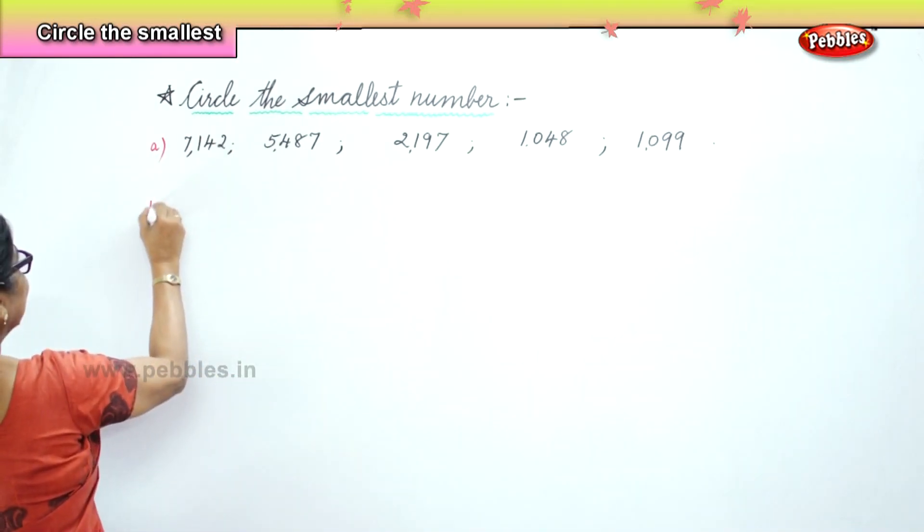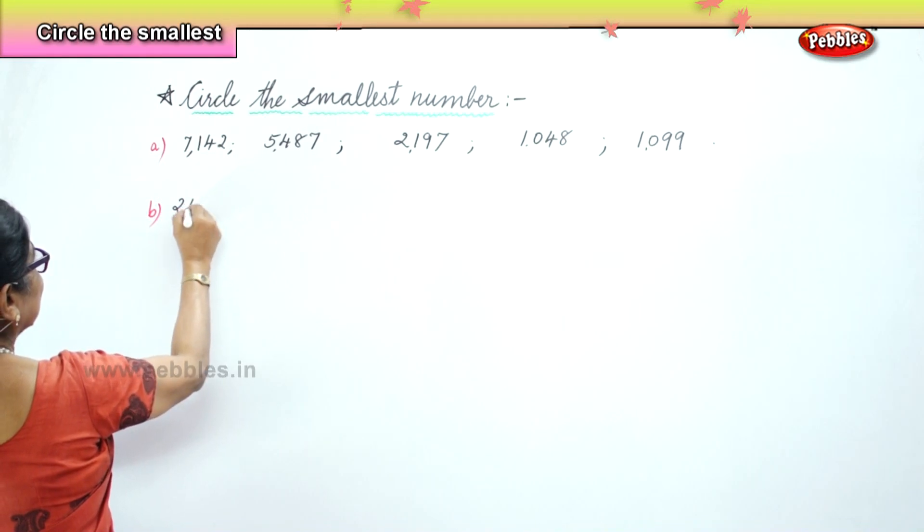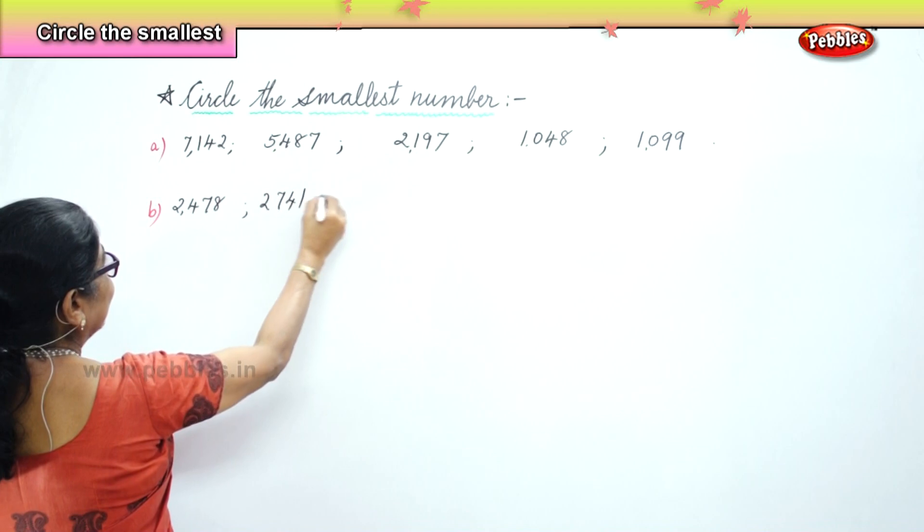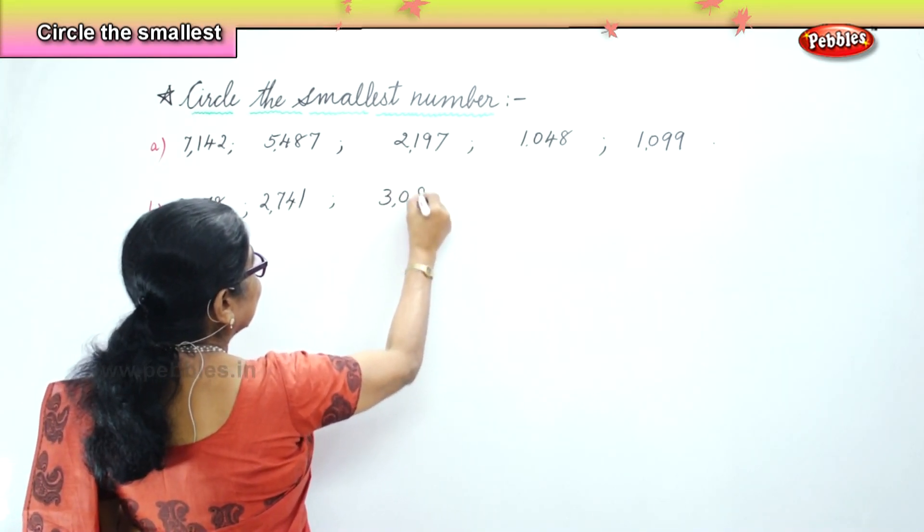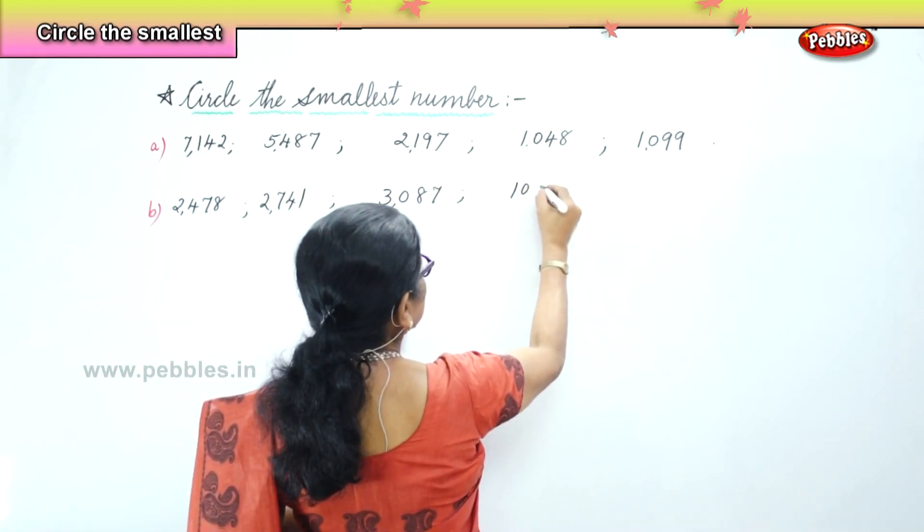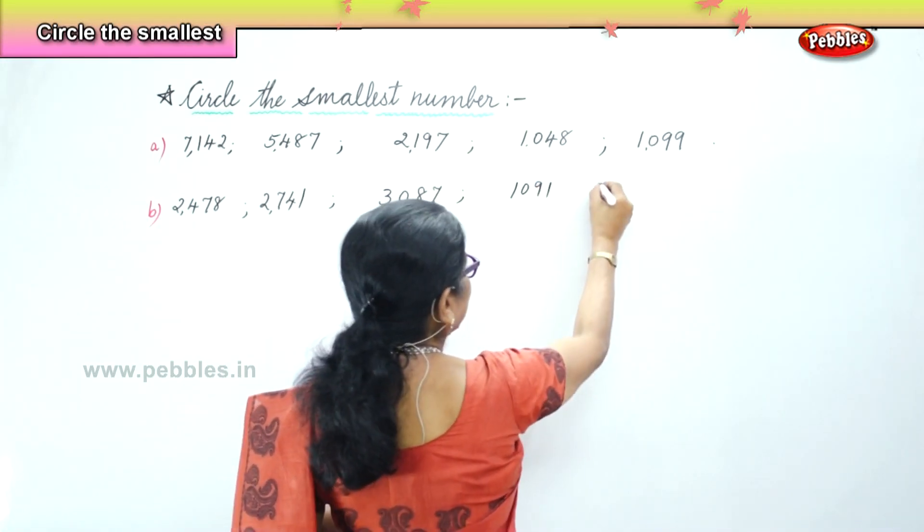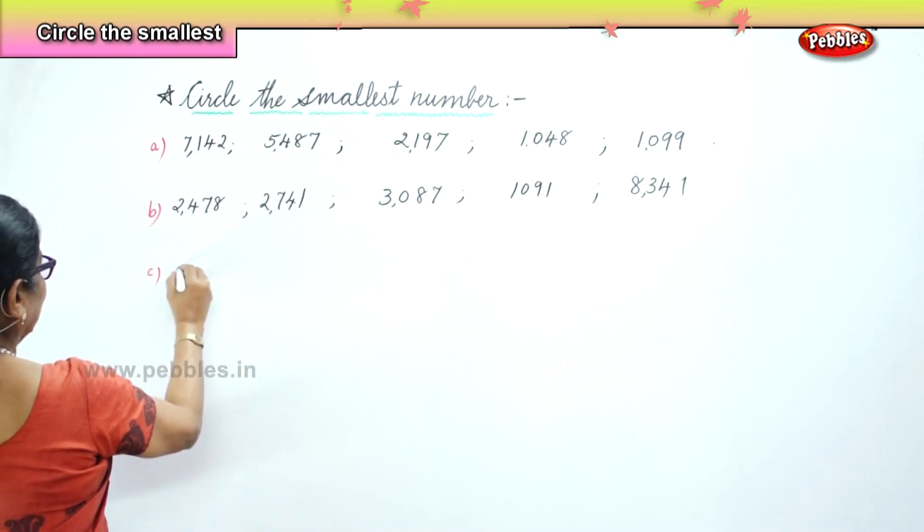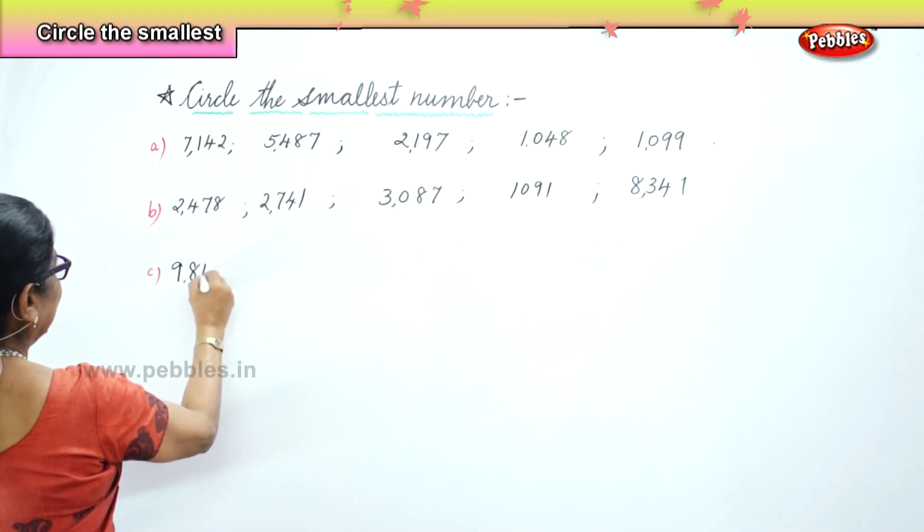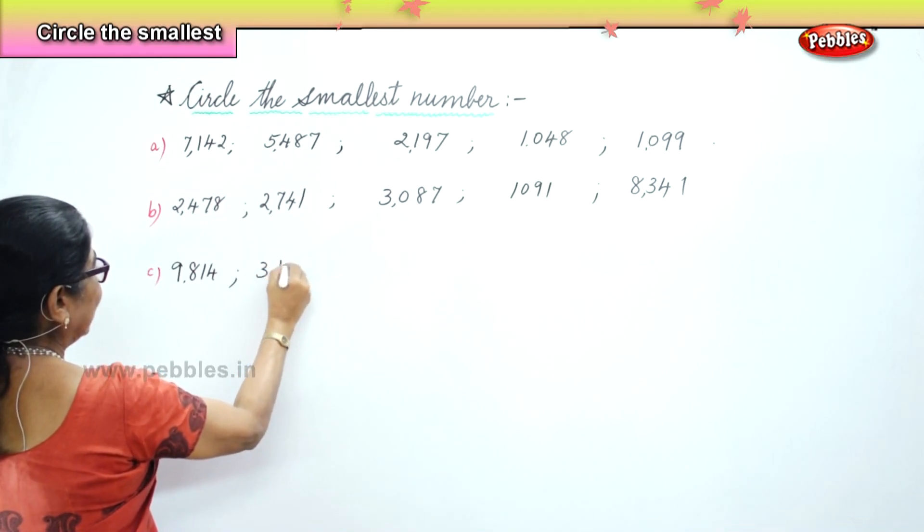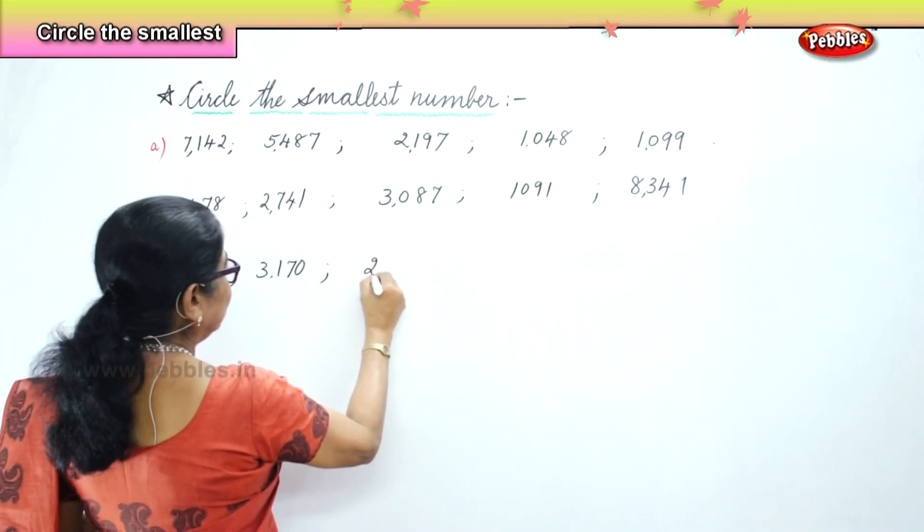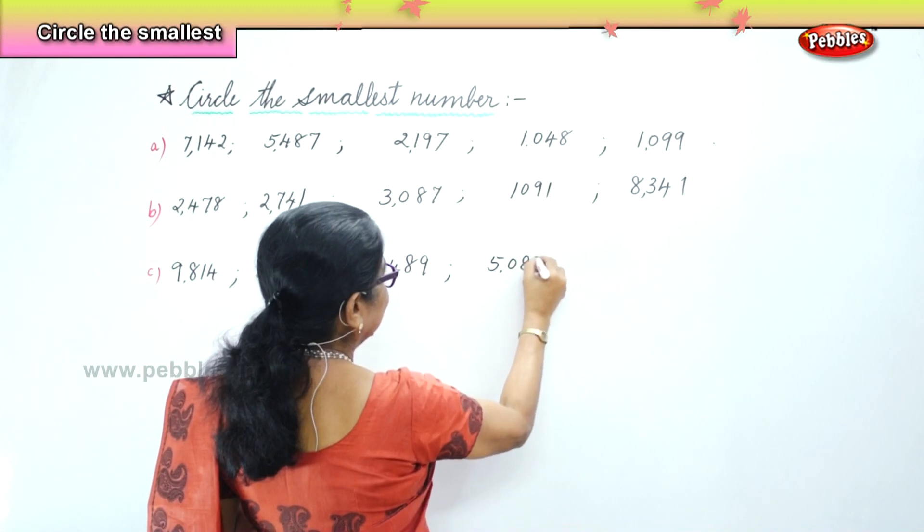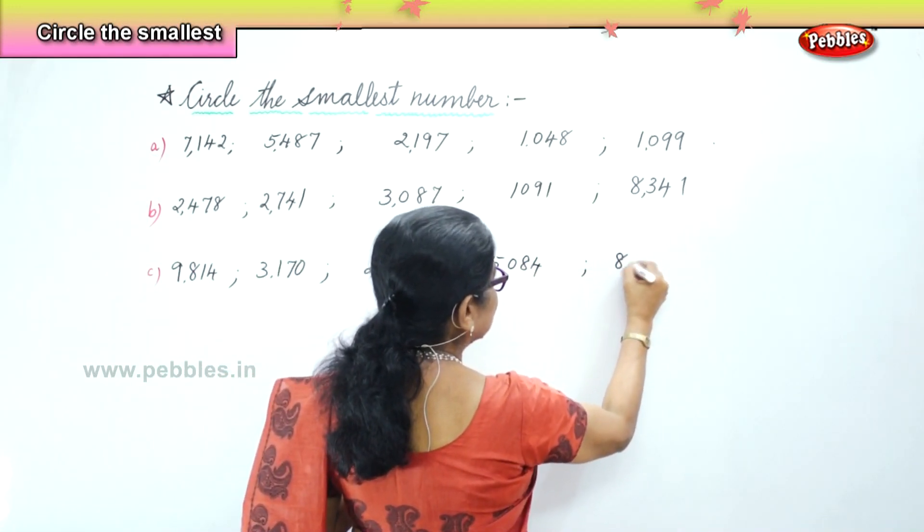So you've got five sets of numbers and then we'll see what to do. Second set: 2,478, 2,741, 3,087, 1,091, 8,341. Third set: 9,814, 3,170, 2,489, 5,084, 8,041.